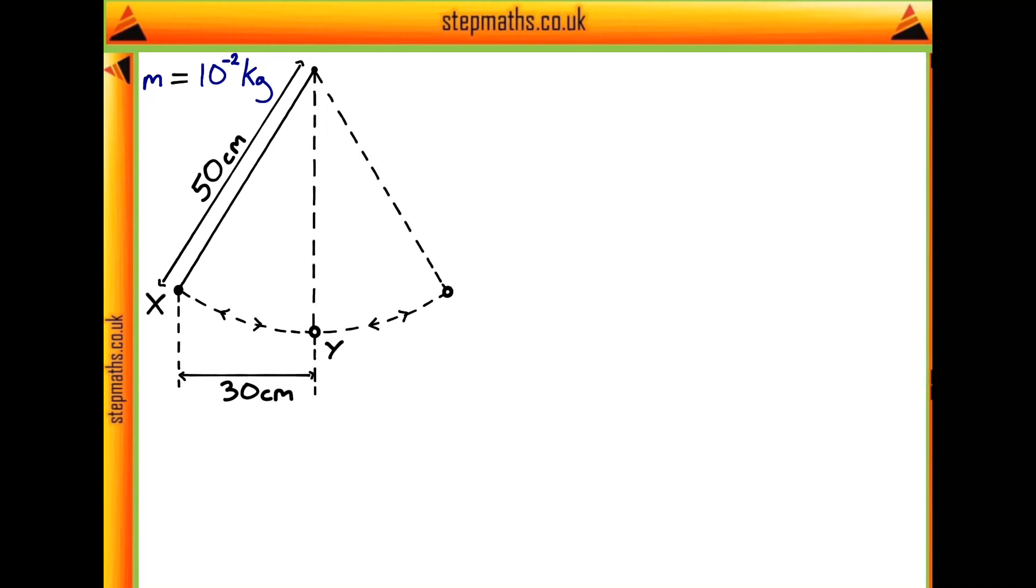So what's the best way of going about answering this question? Well, the easiest thing to do is probably to use conservation of energy. Now, to do this, we want to find the energy at our position x and our energy at position y, and we can go ahead and equate those two.